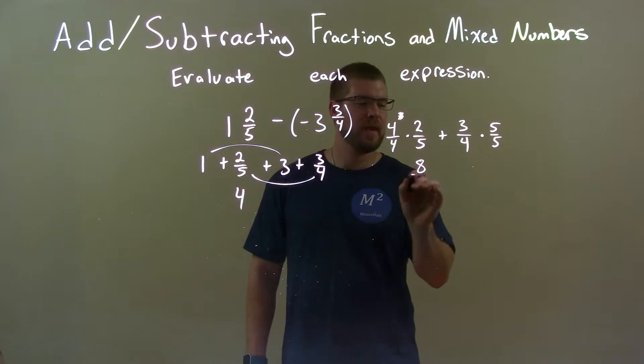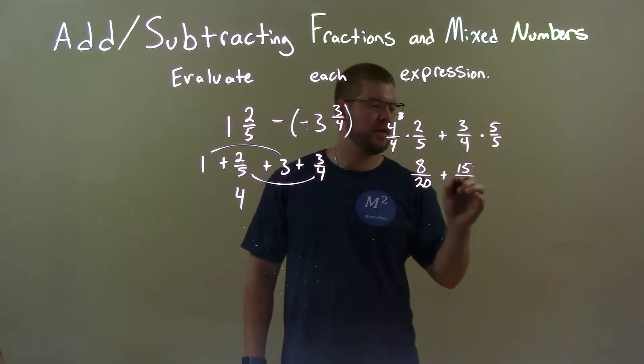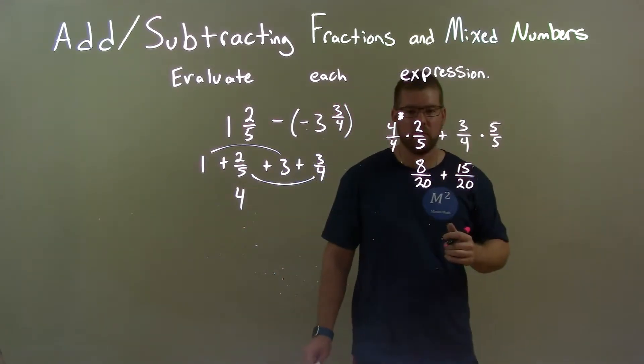4 times 2 is 8 and 4 times 5 is 20. 3 times 5 is 15 and 4 times 5 again is 20. Again, we have the same base. That's what we want.